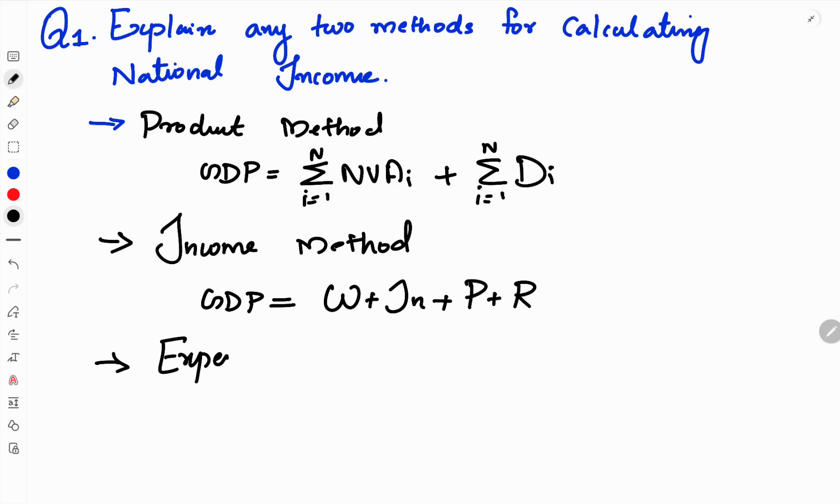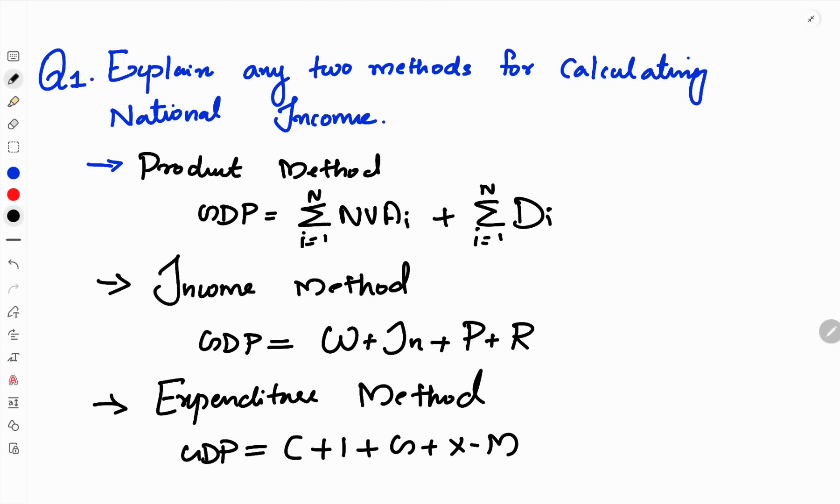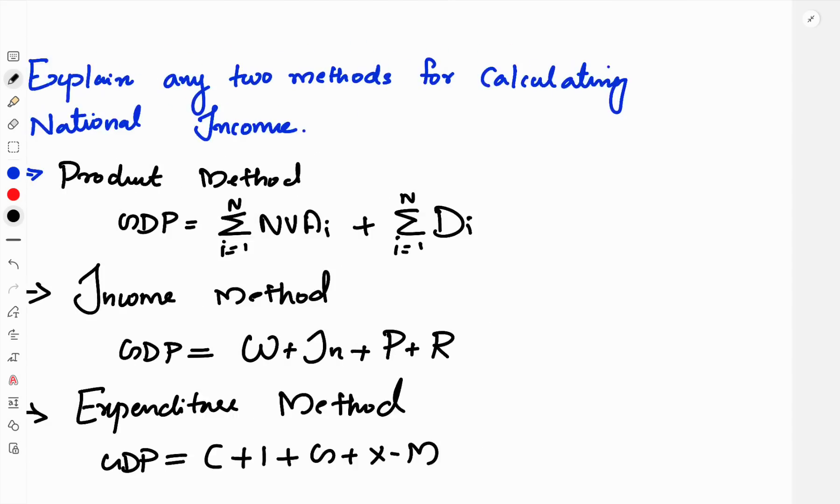Then the last method is the expenditure method. In the expenditure method, there is a total expenditure. So the GDP equation is C plus I plus G plus X minus M. This method is explained step by step to complete it.